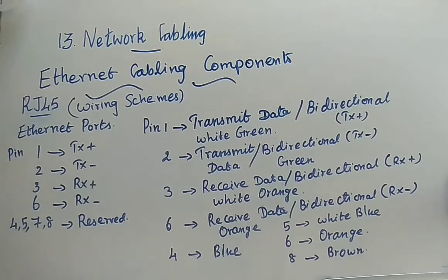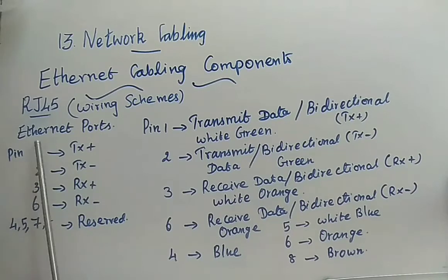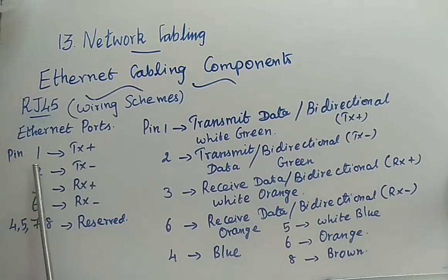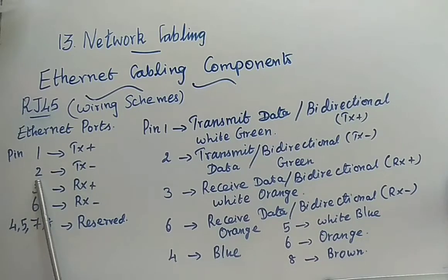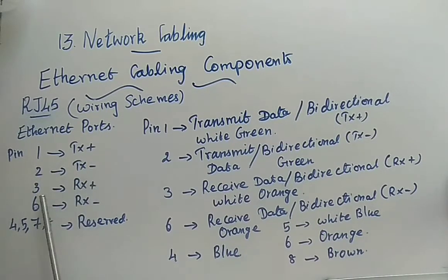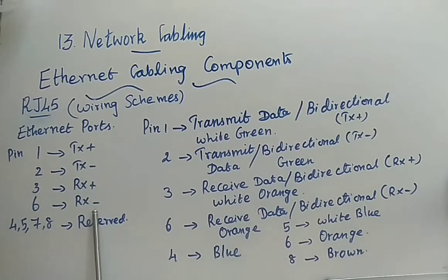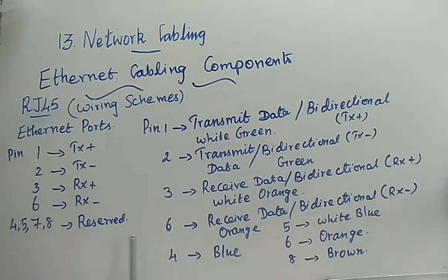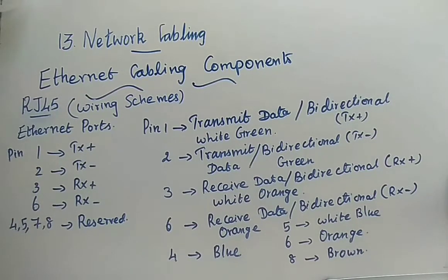These are the ethernet port pins. Pin 1 is for transmission positive, pin 2 is transmission negative, pin 3 is receiver positive, and pin 6 is receiver negative. Pins 4, 5, 7, and 8 are reserved — meaning they can be reprogrammed if needed in the future, otherwise you leave them as is.